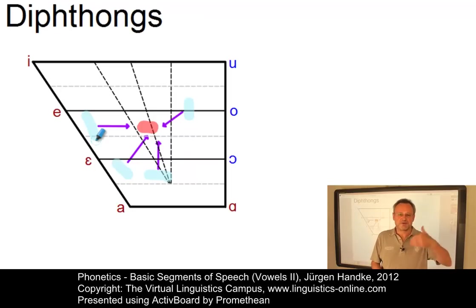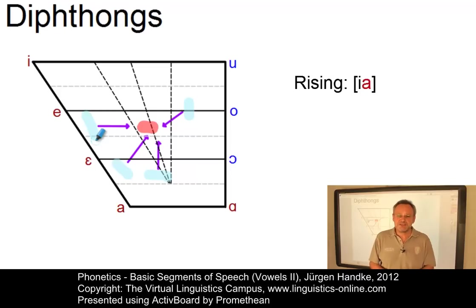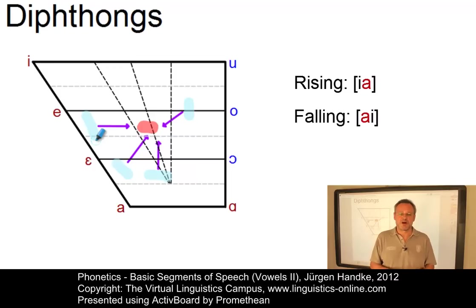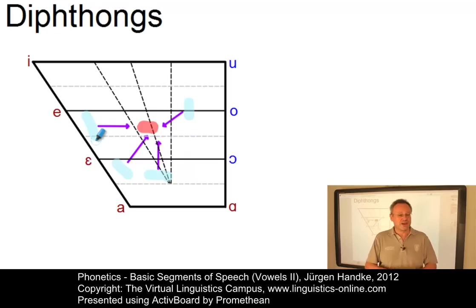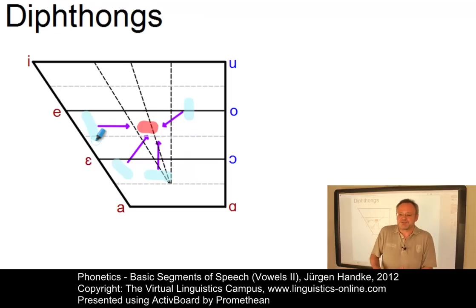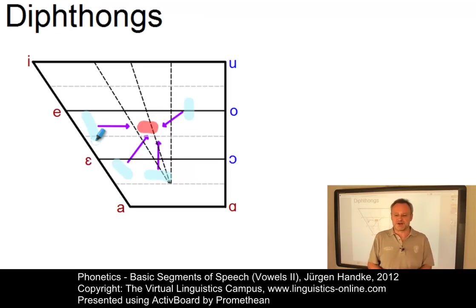A less common classification defines diphthongs according to the prominence of one of their parts. If the second part or the offset is prominent, you have a rising diphthong. If the first part or the onset is prominent, you have a falling diphthong. Cross-linguistically, the onsets, the direction of transition or glide, and the distance of tongue movement vary considerably, as we can show on the vowel chart.